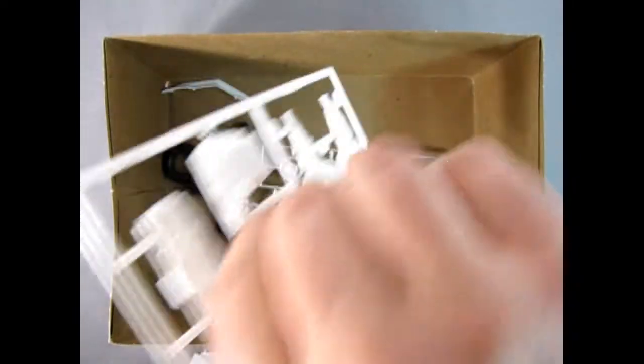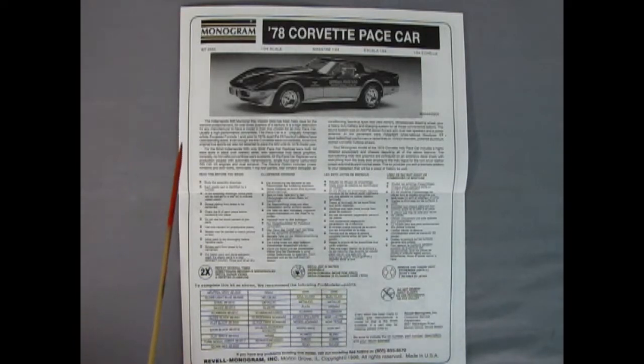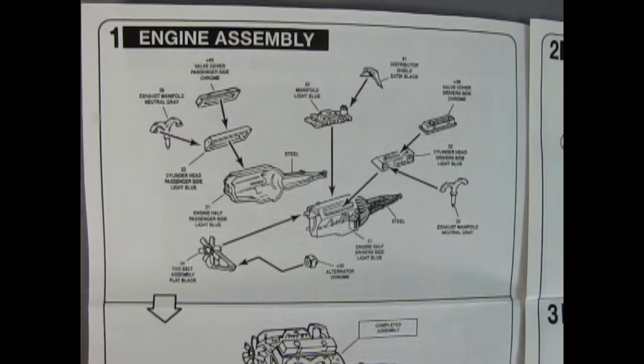Our instruction sheets for the Monogram '78 Corvette are quite large as you can see. You get this nice side view picture of the car as well as a history of the Pace Car itself, and then all the information we need to put our parts together as well as this nice paint chart down here. The box top does say that this is a skill level 3 kit but I would really give it a skill level 2 rating actually.